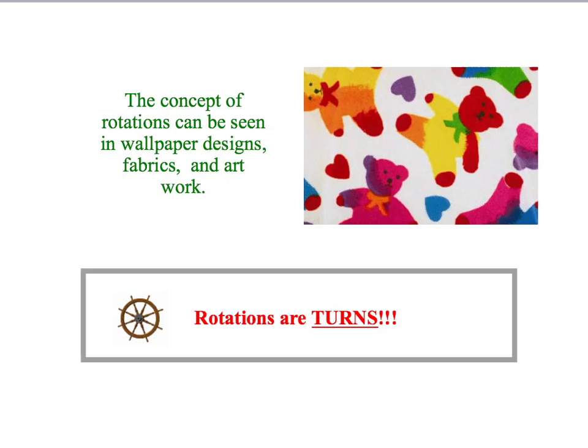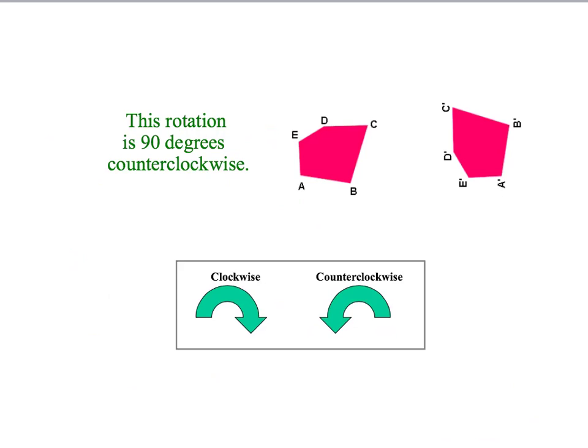There's a lot of different applications that we can have for our rotations, and we have this example of wallpaper or some sort of print here. It's basically a turn of the original image. We turn it around. In this case we have rotated the original image 90 degrees counterclockwise.